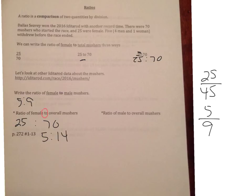And it doesn't matter if you do it in fraction form, if you write it with the word T-O, or if you use the colon. The last one is the ratio of male to overall mushers.